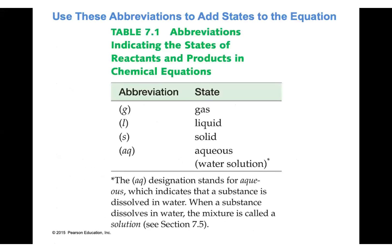In chemical equations, the state of each compound or element is written to the right of it. When you see 'g' in parentheses it means gas, a small 'l' means liquid, a small 's' means solid, and 'aq' means aqueous — a water solution where the solvent is water.